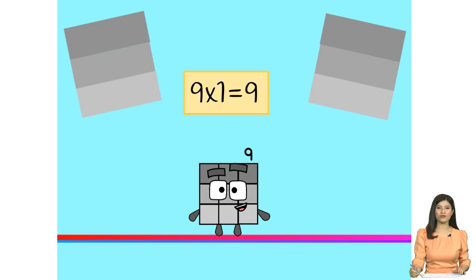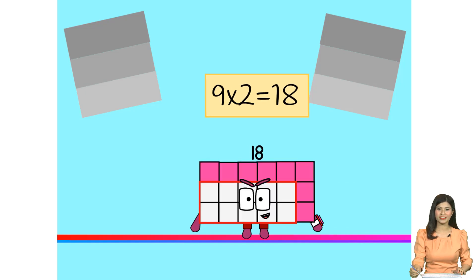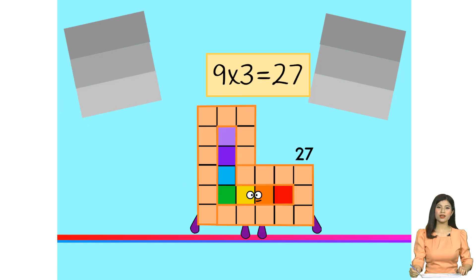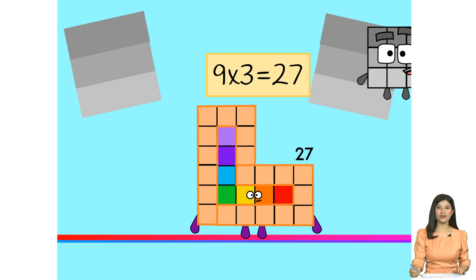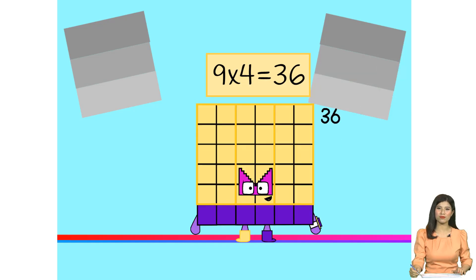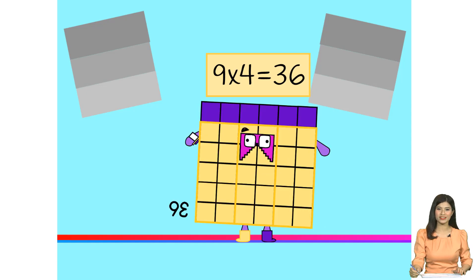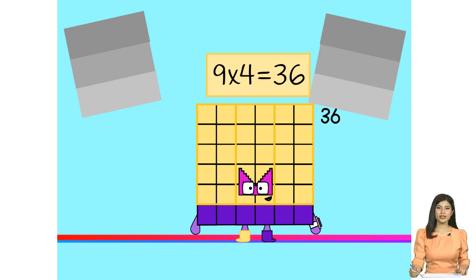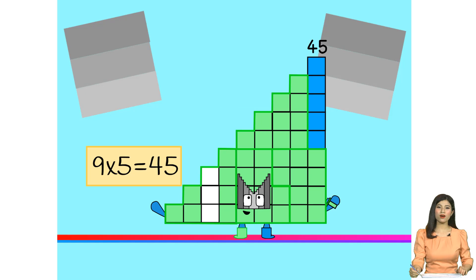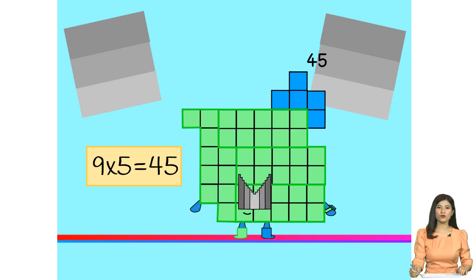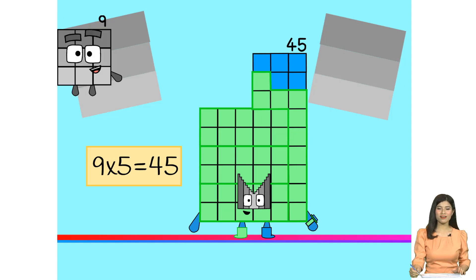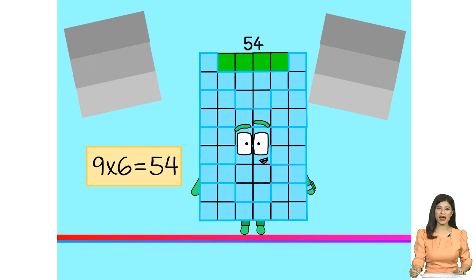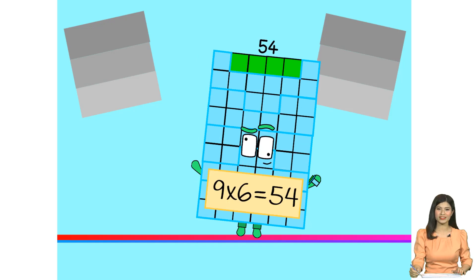8 times 5 are 43, 9 times 5 are 43, 9 times 5 are 45, 9 times 6 are 44.